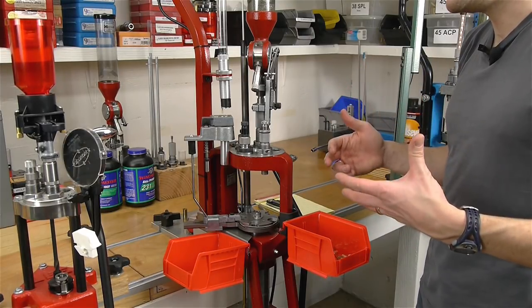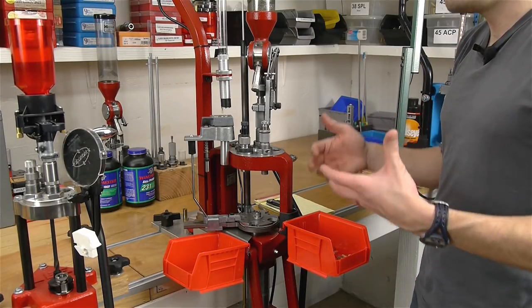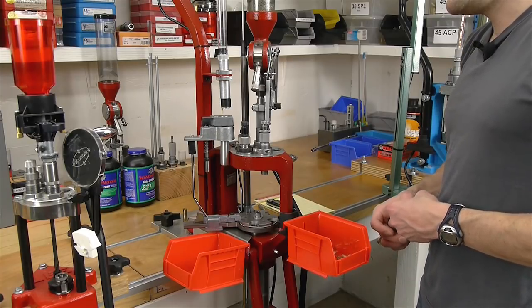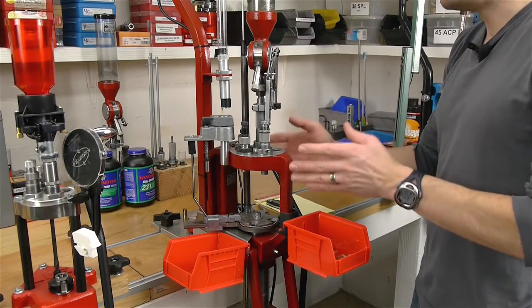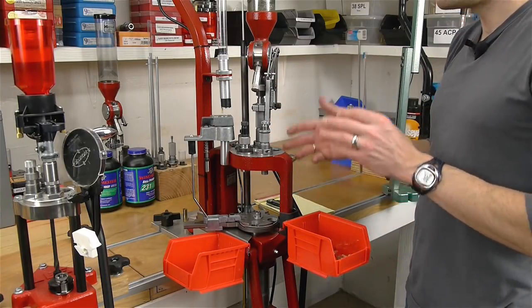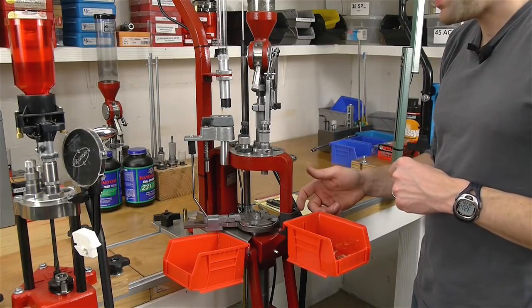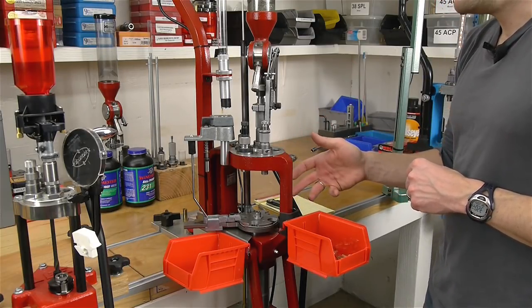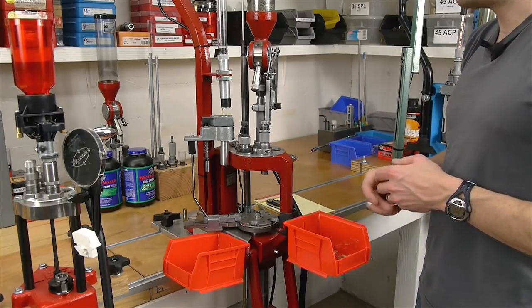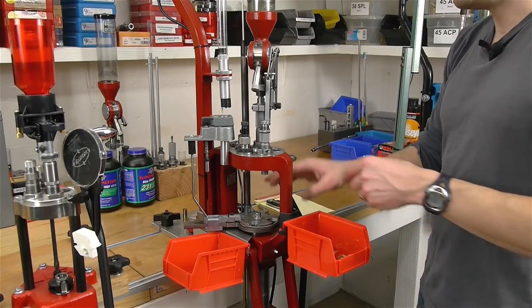Now the downsides are that this type of a press is going to be more expensive. For each caliber changeover setup that you add, you're going to be spending more money because you need a shell plate and you need Lock-N-Load bushings in this particular case.